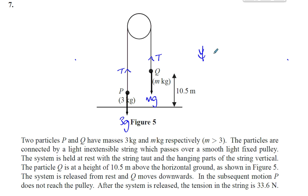The system is held at rest with the string taut and the hanging parts of the string vertical. Particle Q is at a height 10.5 meters above the ground as shown. The system is released from rest and Q moves downwards, which means P moves upwards. In the subsequent motion, P does not reach the pulley. After the system is released, the tension in the string is 33.6 newtons.